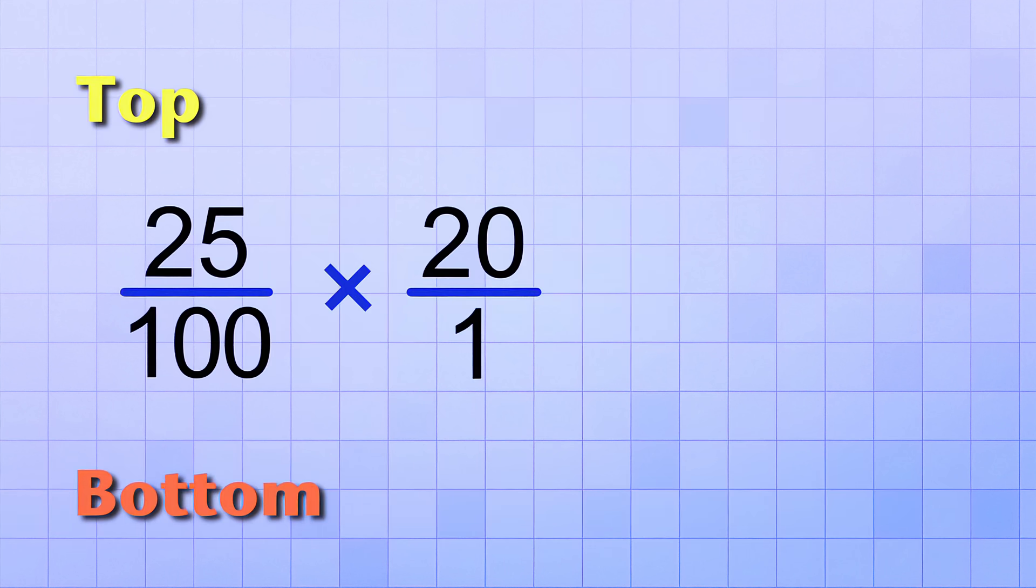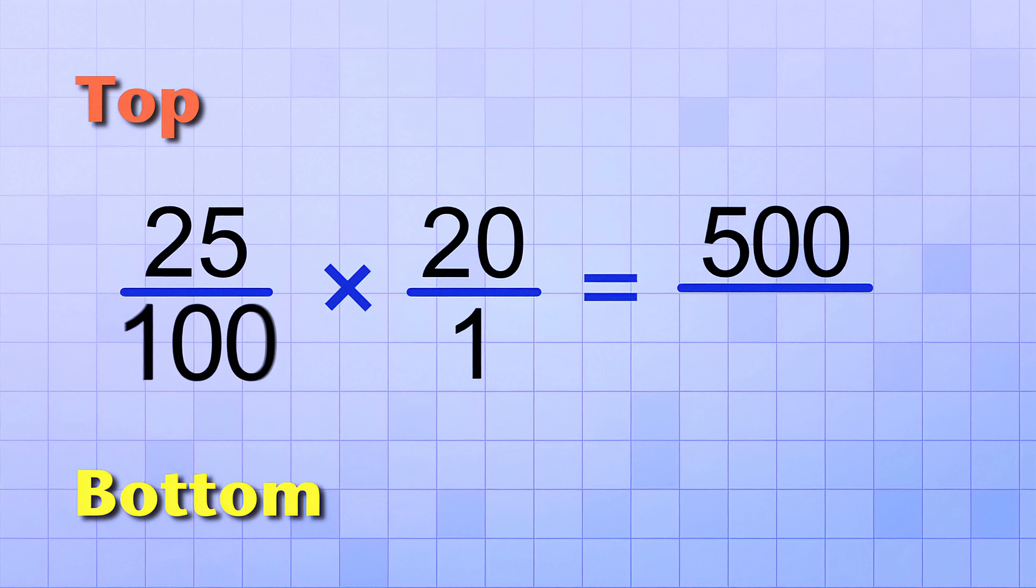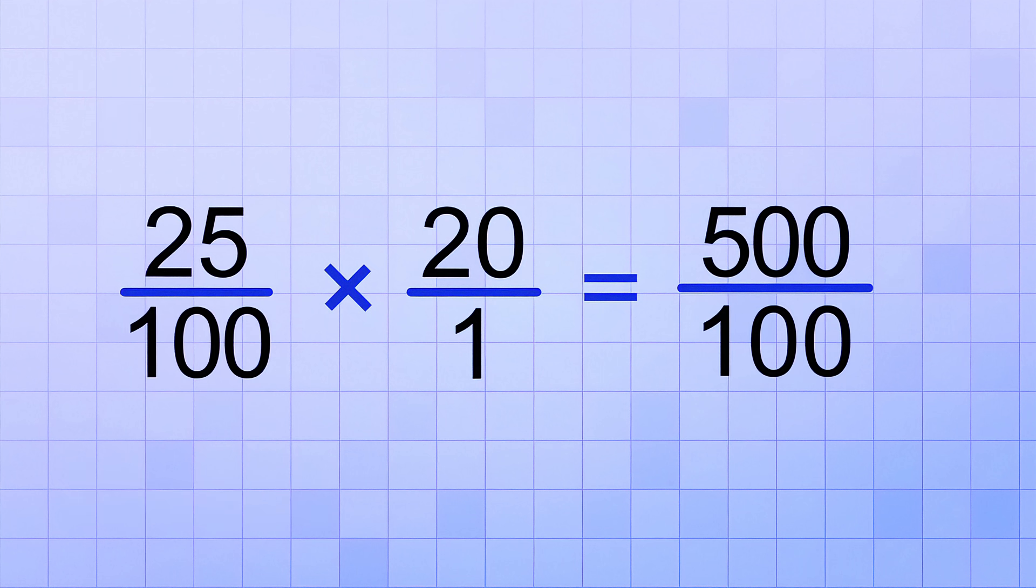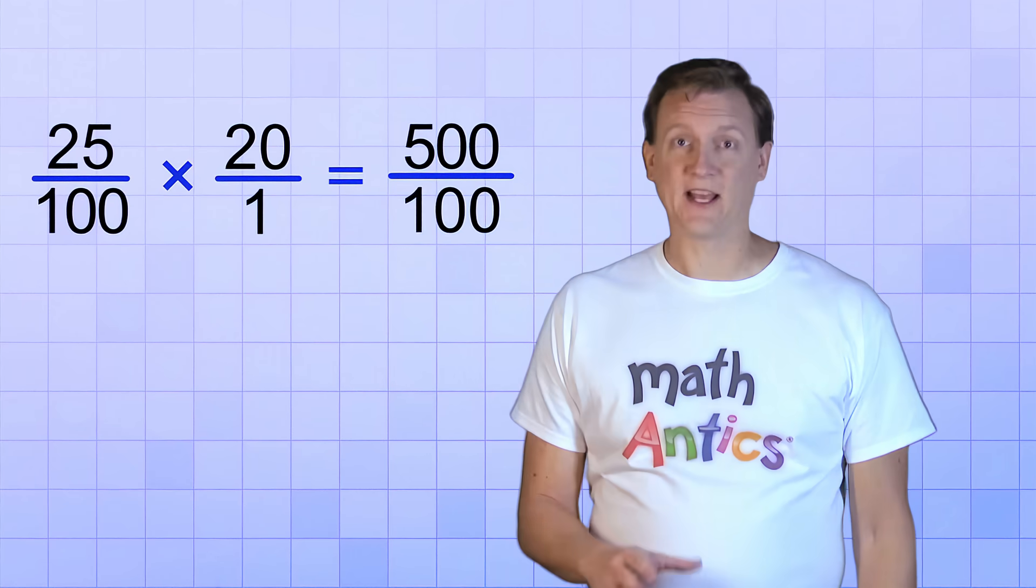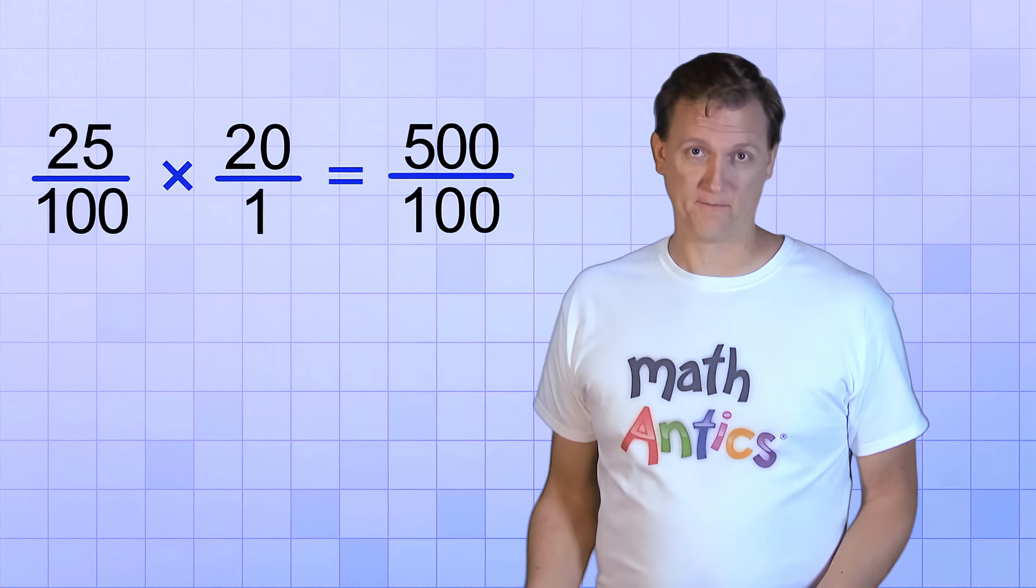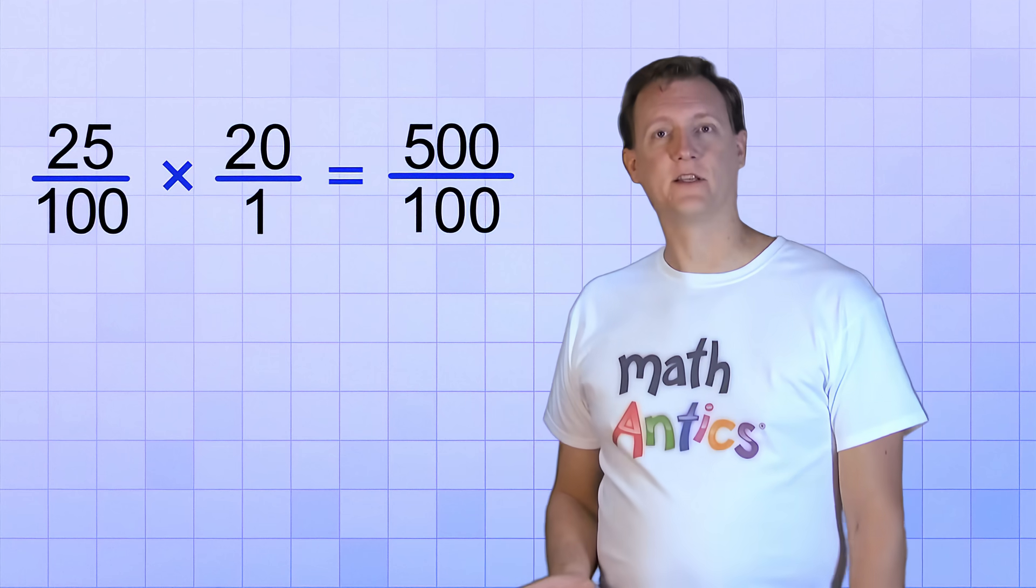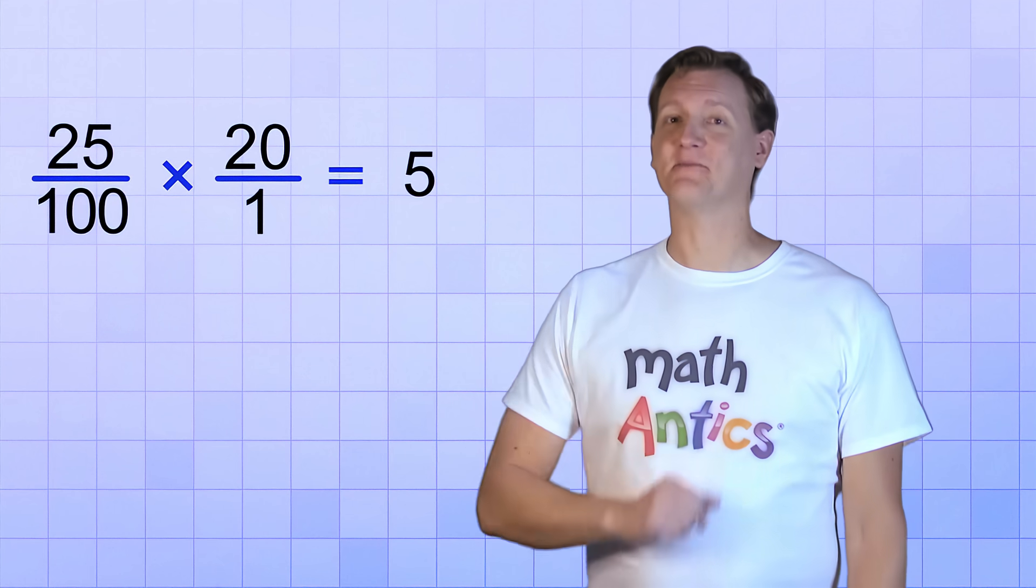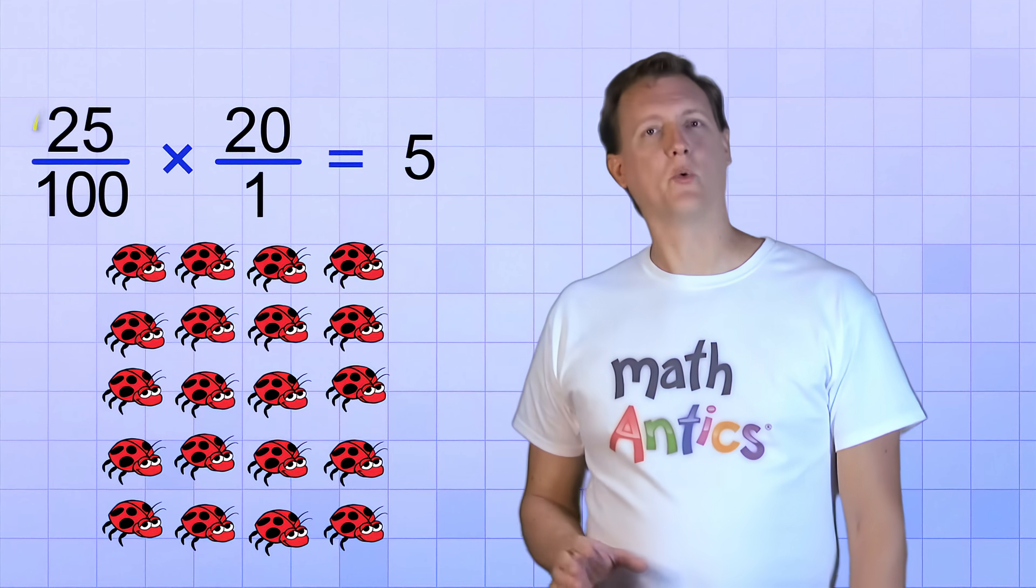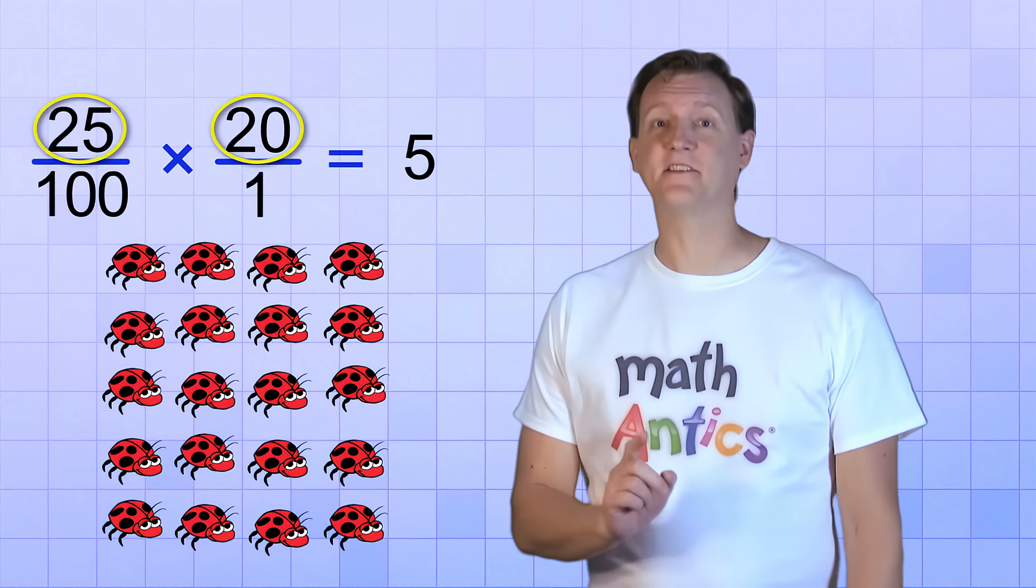On the top, we have 25 times 20, which gives us 500. And on the bottom, we have 100 times 1, which is just 100. So our answer is 500 over 100. Now 500 over 100 might seem like a strange answer, but that's just because we still need to simplify it. 500 over 100 simplifies to 5 over 1, and 5 over 1 is just 5. That's much better! So 25% of 20 is 5.